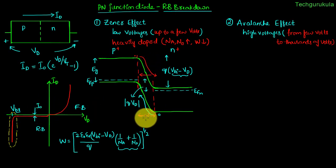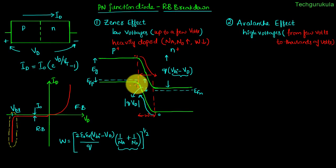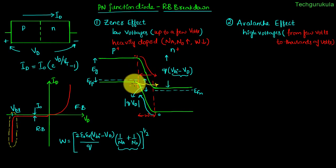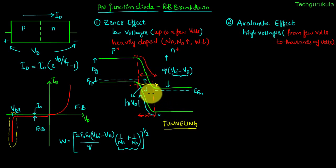But in a heavily doped P-N junction, a different phenomenon happens. On the p-side, there are many valence electrons, and on the n-side's conduction band, there are many vacant states. These valence electrons see many empty states but are separated by only a very thin depletion layer. So what happens is these electrons go through the depletion region and fill the empty states on the other side — this is called tunneling. Tunneling happens when many electrons are separated from many empty states by a very thin barrier, causing electrons to find themselves on the other side.